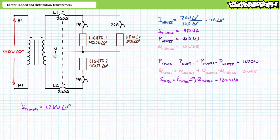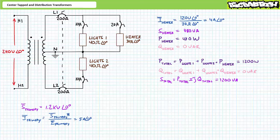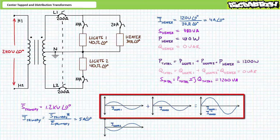If we were to assume this transformer is 100% efficient, we can say the primary must also supply 1.2 kilovolt amperes of apparent power, all of which is directed towards real power. An algebraic manipulation of the AC power formula solving for current demonstrates the 240 volt primary draws 5 amps at an angle of 0 degrees. With the system in the presently unbalanced condition, you will note that current drawn from L1 and L2 are no longer equal in magnitude. L1 provides 3 amps at an angle of 0 degrees to lighting load 1 plus 4 amps at an angle of 0 degrees to the heater, or a total of 7 amps at an angle of 0 degrees.